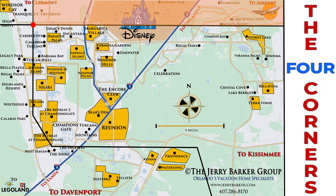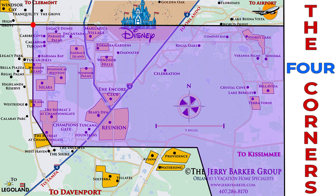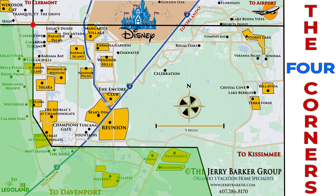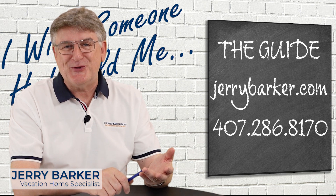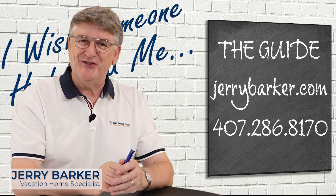Orange County is where Disney is, and there are very few resorts or vacation home areas there. So chances are you're most likely buying in Osceola County, which falls under the category of Kissimmee, or over in Polk County, which falls under the category of Davenport. Or if you're buying a brand new vacation home at Windsor Cay, you will be under Claremont, which is in Lake County. So now you know the difference between Davenport and Kissimmee, Osceola, Polk, and the Four Corners area.